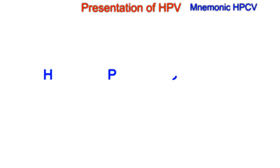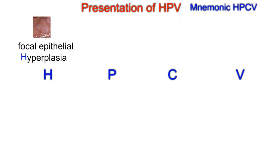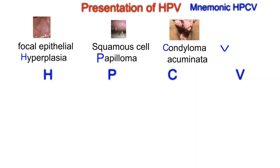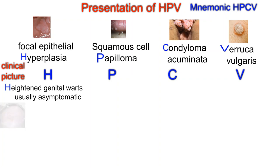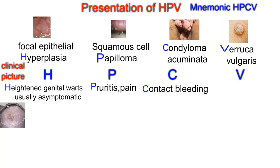HPV infection is suspected by the appearance of clinical lesions in the form of focal epithelial hyperplasia, squamous cell papilloma, condyloma acuminata, and verruca vulgaris. Clinically, genital warts are usually asymptomatic. Condyloma acuminata appears in the labia, vulva, and perineum. Flat and inverted condyloma appear on the cervix. Symptoms include pruritus, pain, contact bleeding, and vaginal discharge.